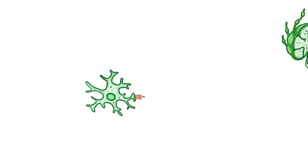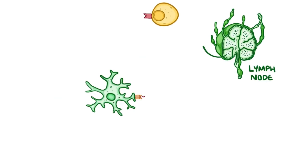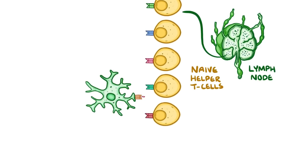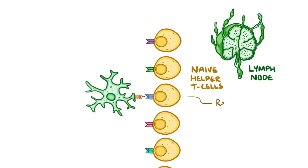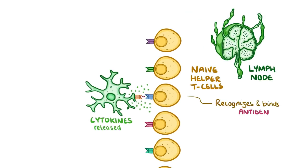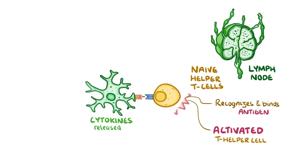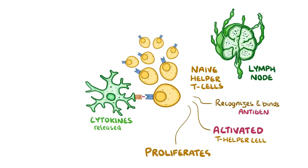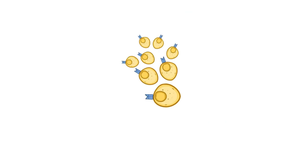The dendritic cell then carries the antigen to the lymph node to find some naive helper T cells, which are T cells that have never seen an antigen before. Eventually, it runs into a naive helper T cell with a T cell receptor that recognises and binds to the antigen. Then, cytokines get released by the dendritic cell, and this helps to activate the helper T cell, which then begins to divide or proliferate. The new T cells then leave the lymph node to fulfil their destiny in the great fight against infection.